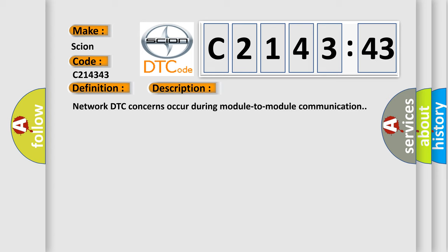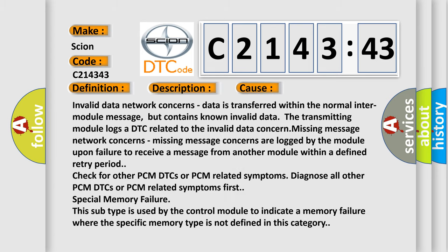Network DTC concerns occur during module-to-module communication. This diagnostic error occurs most often in these cases: Invalid data network concerns where data is transferred within the normal inter-module message but contains known invalid data that transmitting module logs a DTC related to the invalid data concern. Missing message network concerns are logged by the module upon failure to receive a message from another module within a defined retry period. Check for other PCM DTCs or PCM related symptoms.